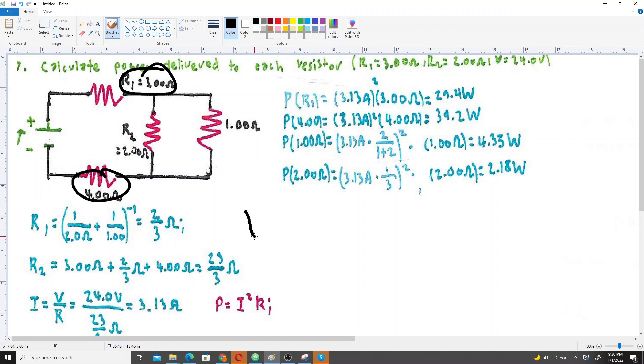And then we know from this equation V equals I times R, current times resistance. We can solve for I and we get 3.13 amps.